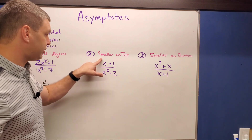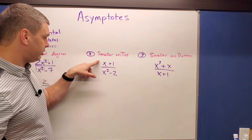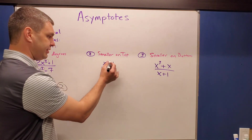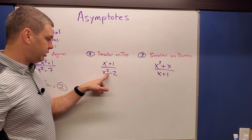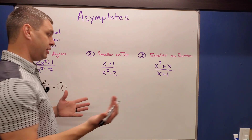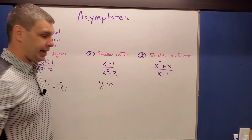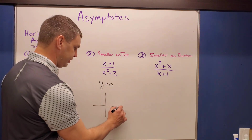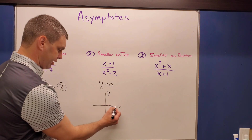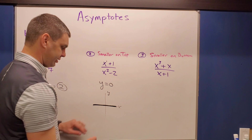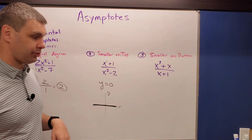The second case is when the smaller degree is on top — in the numerator. For example, just x (degree one) on top and degree two on the bottom. When this happens, the horizontal asymptote is simply the line y equals zero. On a graph, y equals zero runs right along the x-axis, and that is our horizontal asymptote whenever the smaller degree is in the numerator.